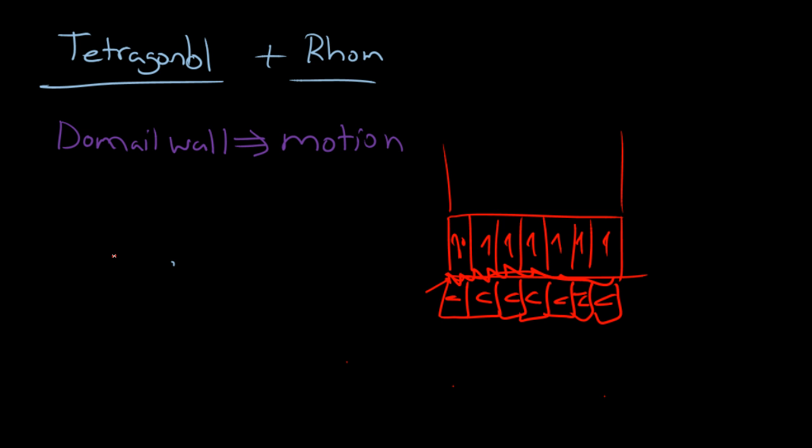Now I will draw a slightly different picture. Instead of drawing every single unit cell together, I'm going to just draw a big block. We have all these unit cells within here, they're all pointing one way. Let's say we have another one, another block here, and all the unit cells are pointing that way.